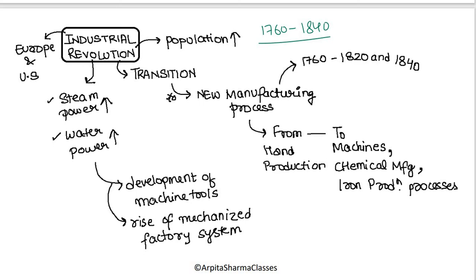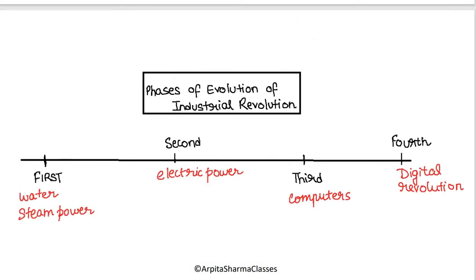During the Industrial Revolution, water power and steam increased, steam engines were created, and new machine tools were used and innovated. A new form of mechanized factory system replaced the traditional one. The Industrial Revolution can be studied in four phases. In world history, we study the first phase. In subsequent batch lectures, we will cover the second phase involving electric power, and the third and fourth phases including computers and the digital revolution.